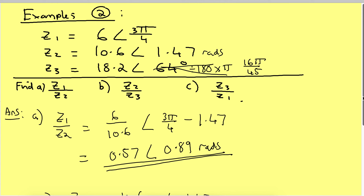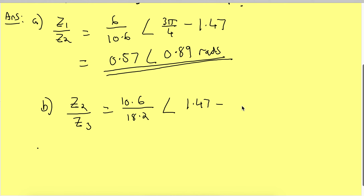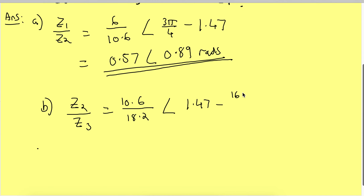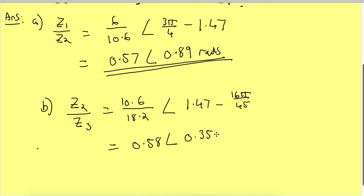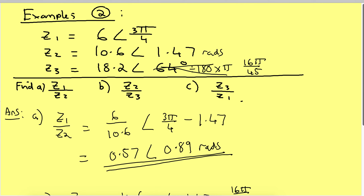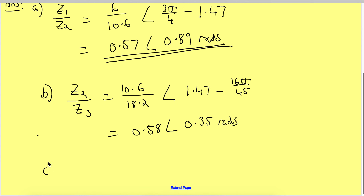So that should be 16π/45. You could use it in degrees, whatever works for you — or as a decimal, take away 16π/45. 10.6 divided by 18.2 gives me 0.58, and an angle of 1.47 take away 16π/45, which gives me 0.35. These are all fine because they're between negative pi and pi radians. Remember pi is 3.14. Now Z3 divided by Z1 — and remember that would be different from Z1 divided by Z3.